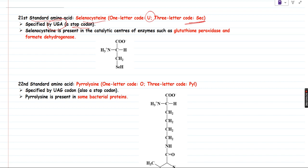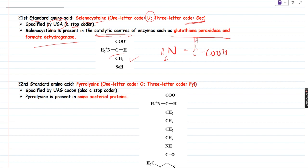Selenocysteine is an important constituent of the catalytic centers of certain enzymes such as glutathione peroxidases and formate dehydrogenases, which have very important roles in certain biological pathways. If you see the structure of selenocysteine, you know the structure of cysteine — it is COOH, NH2, H, and CH2SH. Instead of S, if you put Se, then it is selenocysteine. Very simple.